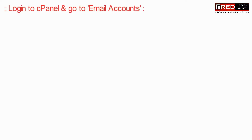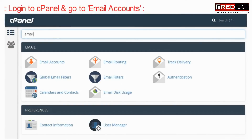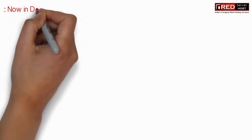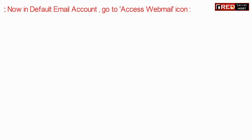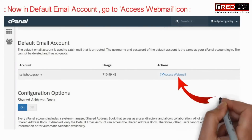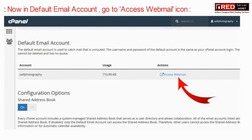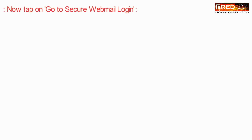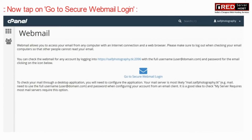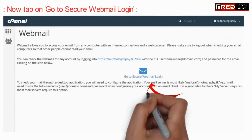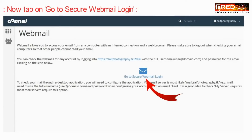To do that, log in to cPanel and then go to Email Accounts. Here, in the default email account section, click on the Access Webmail icon. This way you will be able to see all the emails in a single place.